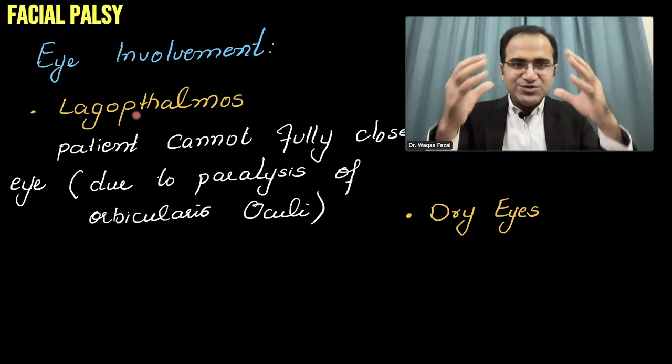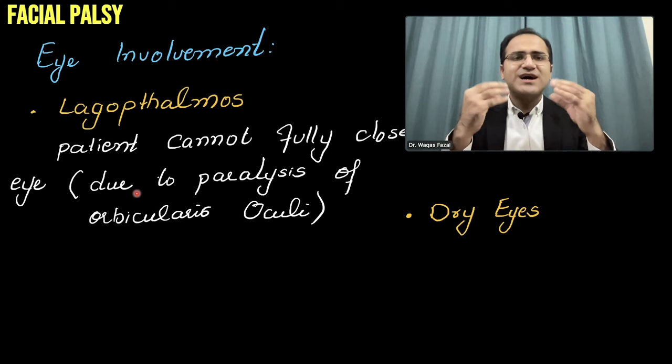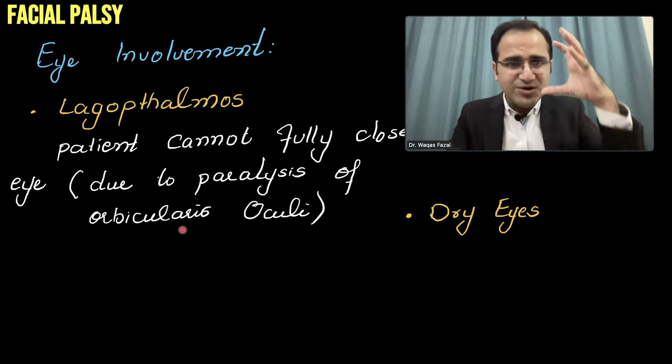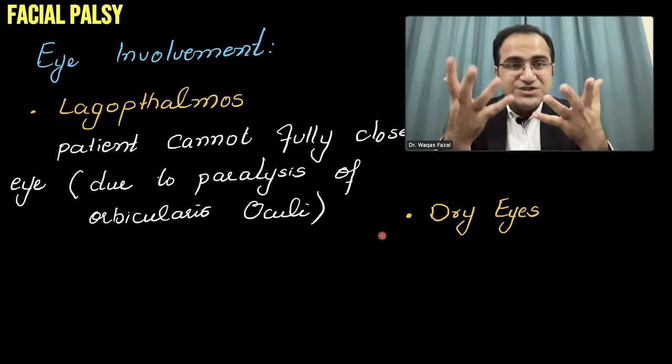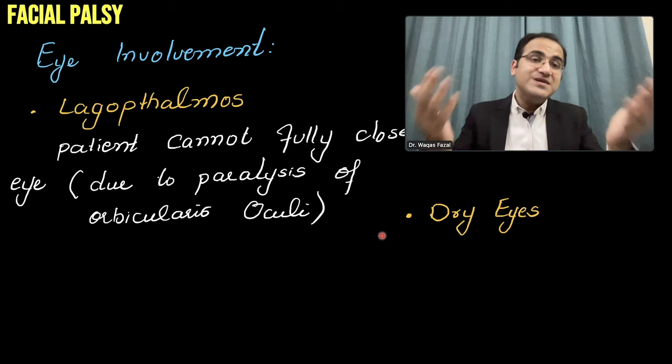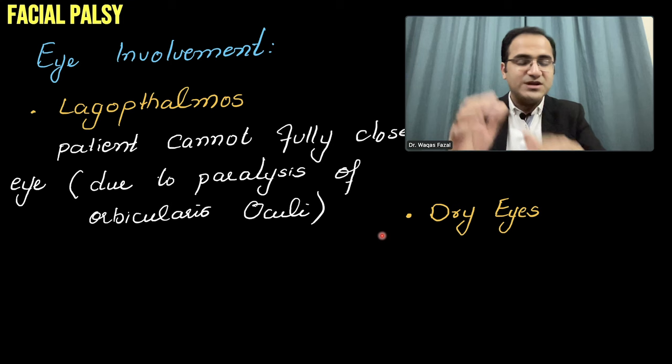Regarding eye involvement — when you ask these patients to close their eyes, they won't be able to close them because orbicularis oculi cannot contract. There will be lagophthalmos — the patient cannot fully close the eye. Always ask the patient to close the eyes to make it more prominent. There is also a risk of dry eyes: the lacrimal glands are also supplied by the facial nerve, so tear secretion will be low. The eyes are open and dry, creating a high risk that these patients will develop keratitis — inflammation of the cornea.